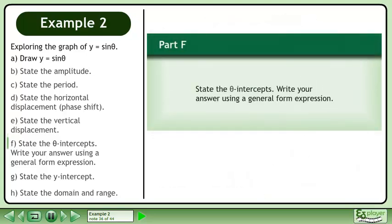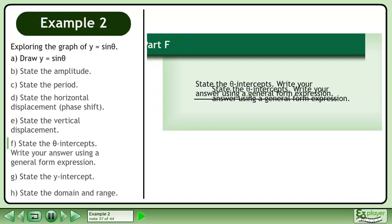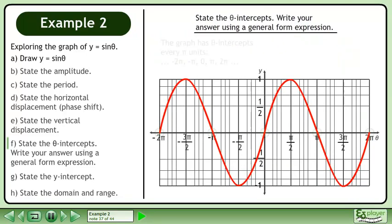In part f, state the theta intercepts. Write your answer using a general form expression. The graph has theta intercepts every pi units. They include negative 2pi, negative pi, 0, pi, and 2pi extending forever in both directions.